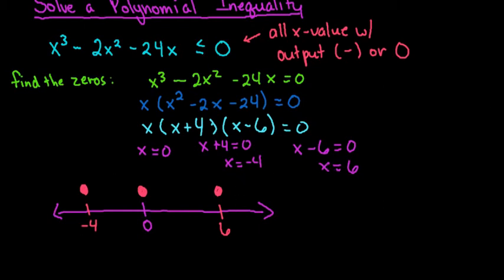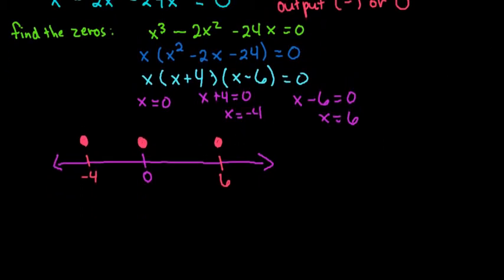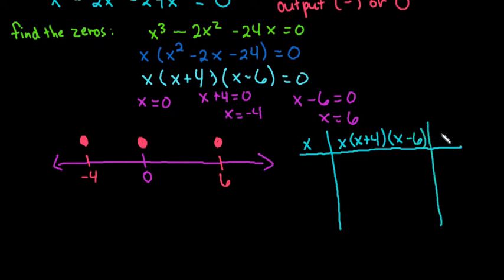So what we want to do when we're solving this algebraically, what we want to do is, and I'm going to use the factored form just because it's easier to see what's going on. I'm going to pick values for x, and I'm going to plug it into the factored form of this, the x times x plus 4. We can use the original one. The factored form just makes it easier to see. And then we're going to look at the output of our, the sign of our output.